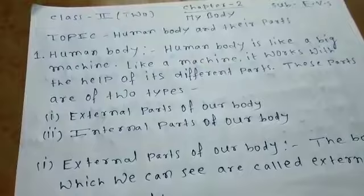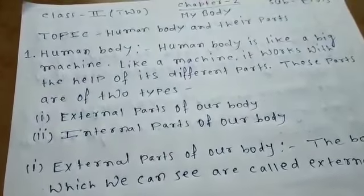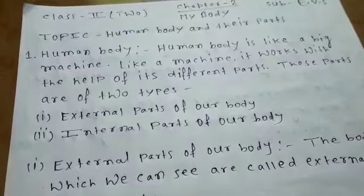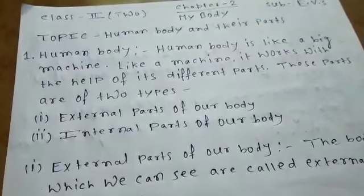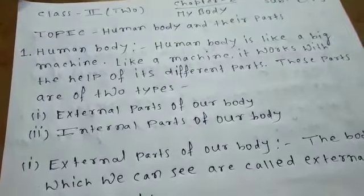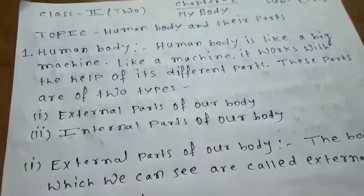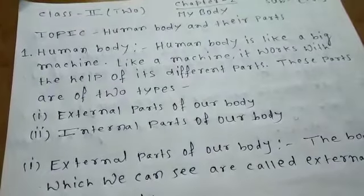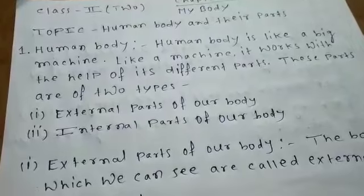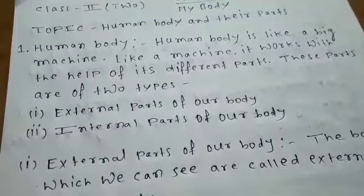Human Body is like a machine. Human Body, ek body machine ke jaysa hai. Like a machine, it works with the help of different parts. This machine can work with different parts.